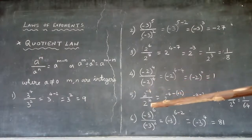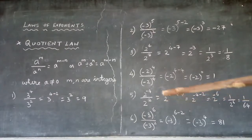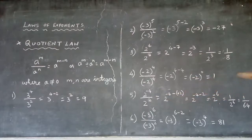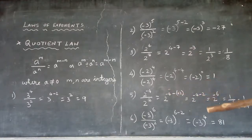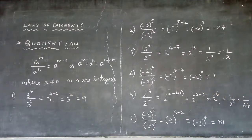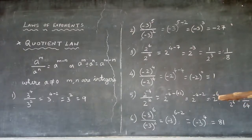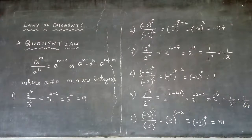Example 5: 2^(-4) divided by 2^(+2). Write the base 2 and subtract the exponents: (-4) minus (+2). Opening the bracket: minus 4 minus 2. Same signs — put the sign and add: -6. So the result is 2^(-6). Please be careful — this uses addition of integers, not multiplication. Converting: 2^(-6) = 1/2⁶ = 1/64.